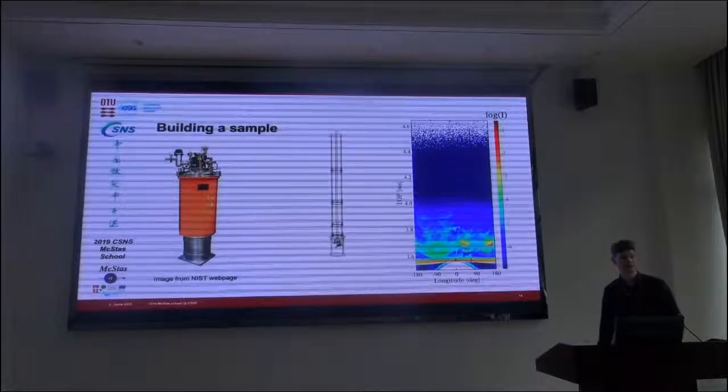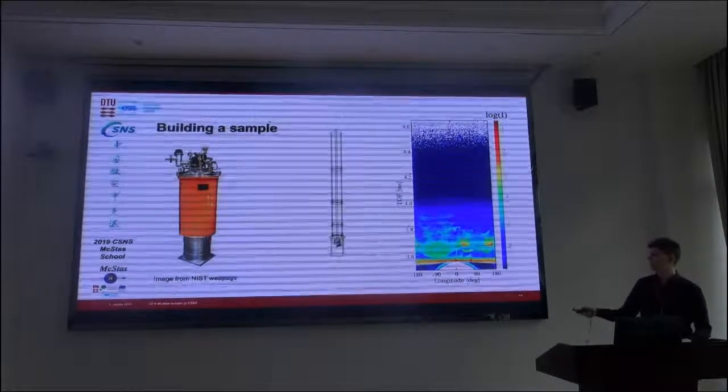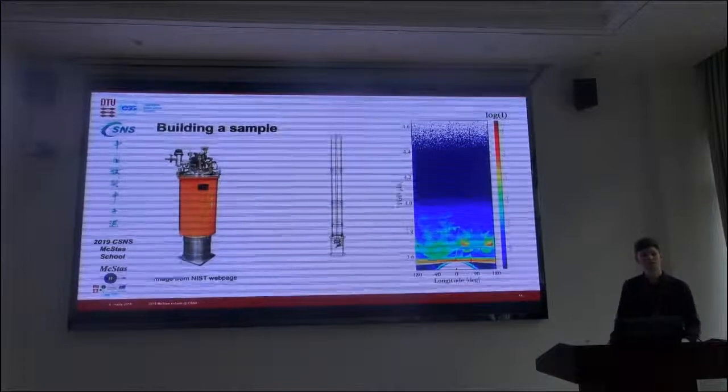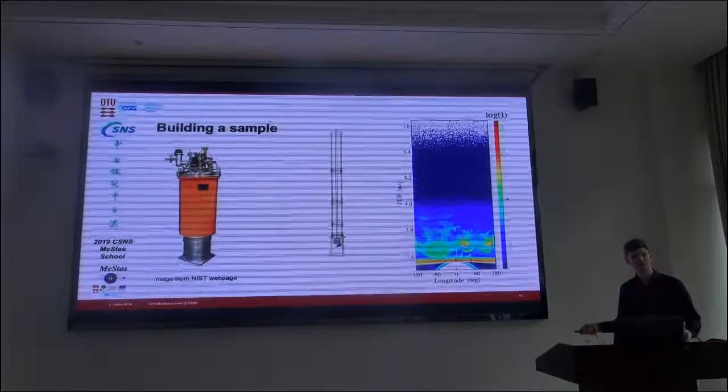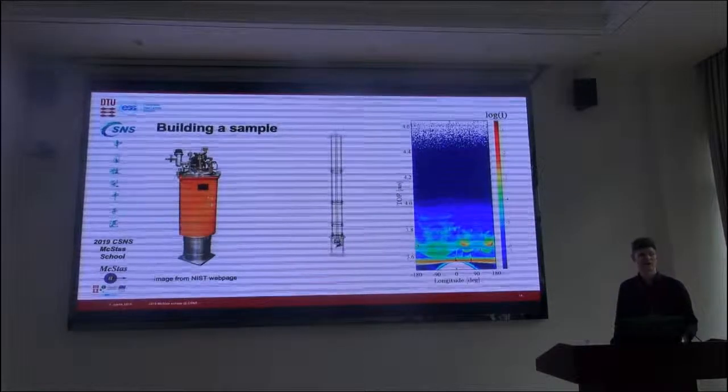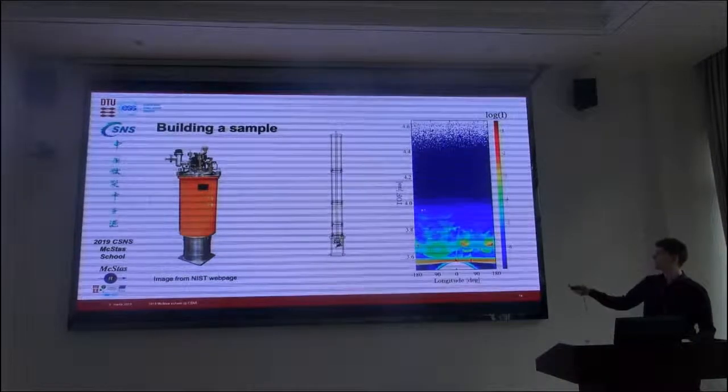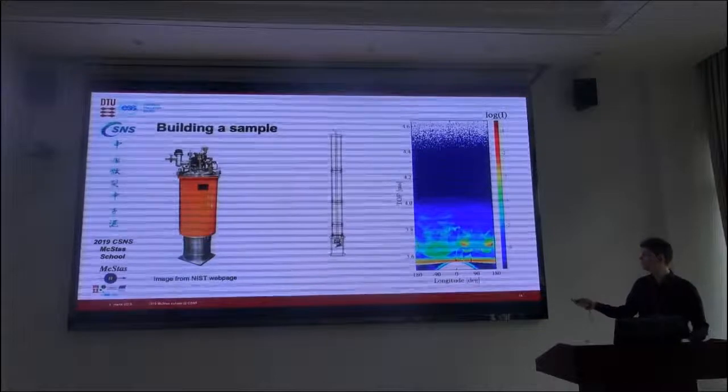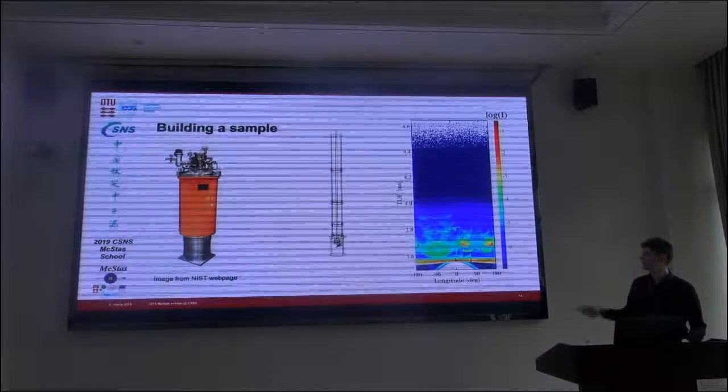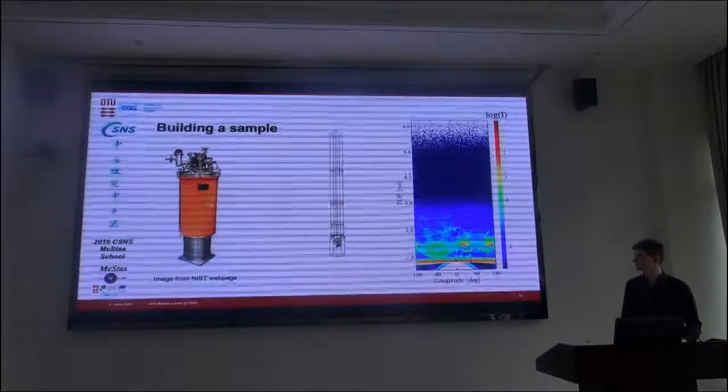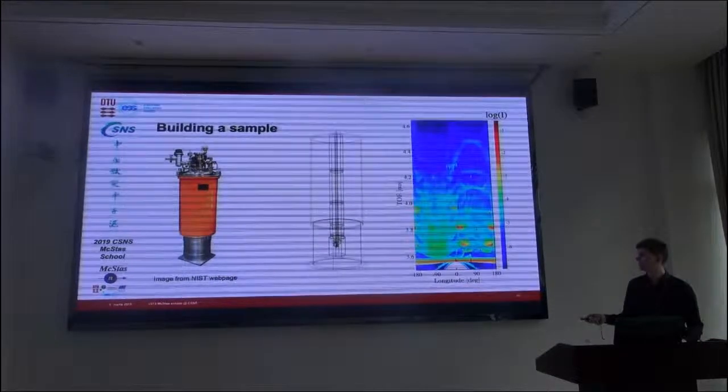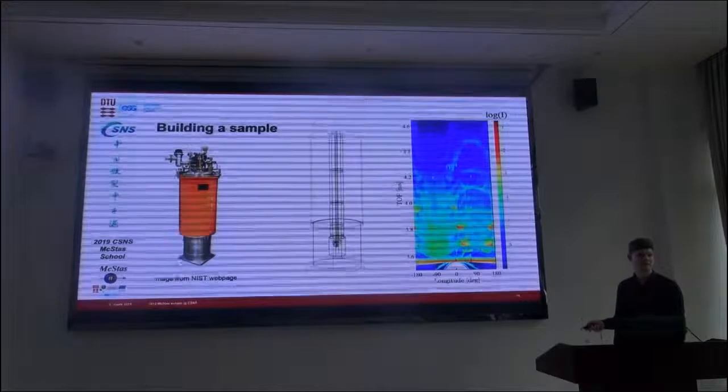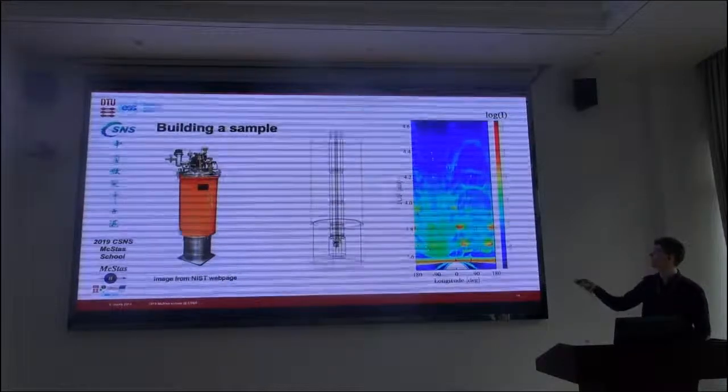Now, we add the inner part of the cryostat. And now, the rays need to go through several layers of material, and can bounce back and forth in there, because there is backscattering in aluminum at these energies. And we see even more delayed scattering and problems. And this is just the inner layer of the cryostat.